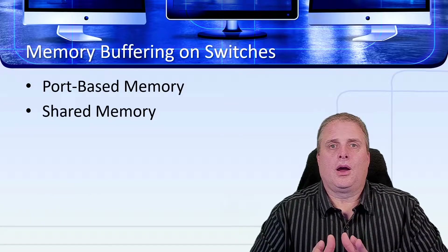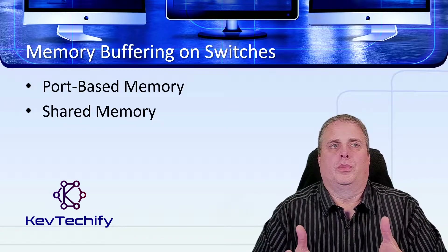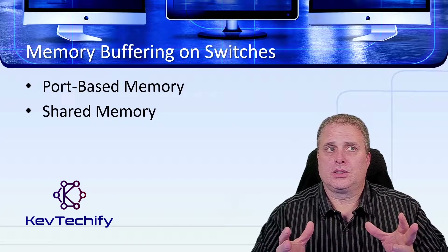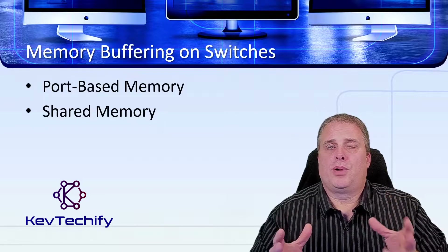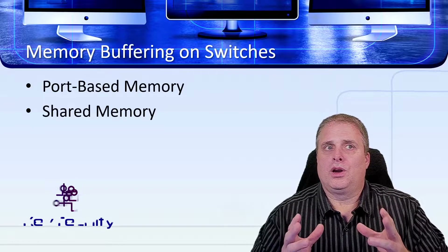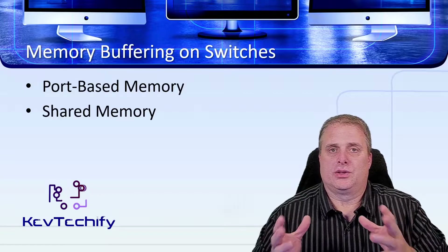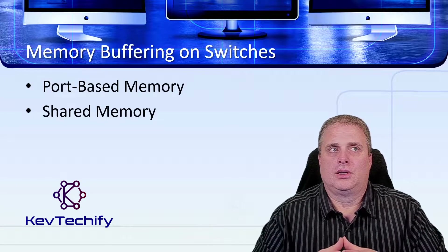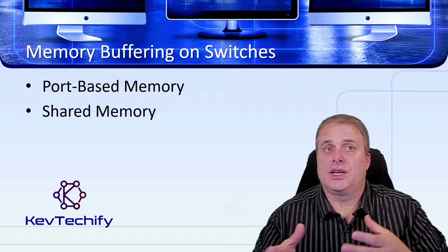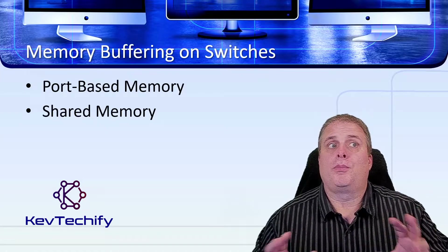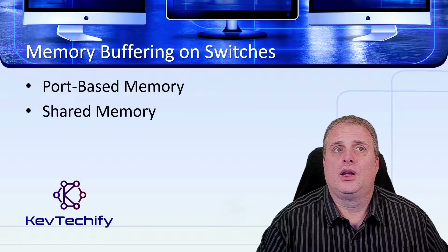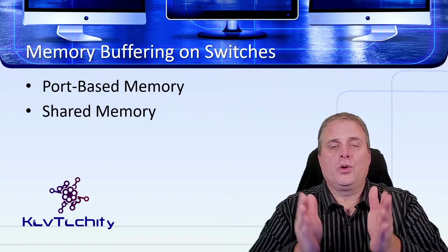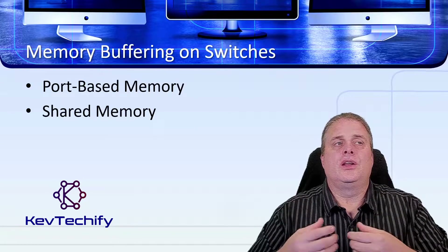With shared memory, all the memory is in one common memory buffer shared by all ports on the switch. The amount of buffer memory required by a port is dynamically allocated — the switch decides how much memory each port gets. Frames in the buffer are dynamically linked to the destination port, enabling a packet to be received on one port and transmitted on another without moving between queues, unlike port-based memory.